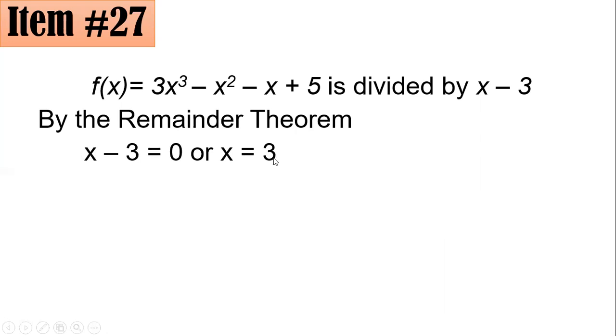And what you have to do is substitute this 3 into this given dividend. And we will evaluate, we will find the value of f(3), and whatever the value of f(3), that is your remainder as well. So for that, f(3) = 3(3³) - 3² - 3 + 5.